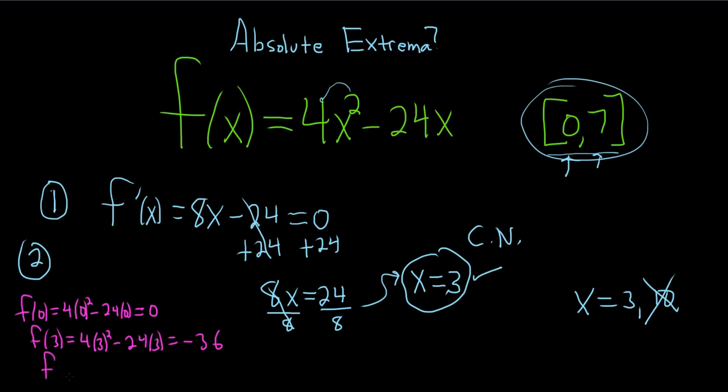And then the last one would be f of 7. All right. You've got to take both of these numbers, the 0 and the 7. So that would be 4 times 7 squared minus 24 times 7. So I'm going to put this in my calculator. So 4 times 49. 7 squared is 49. Minus 24 times 7. I got 28.